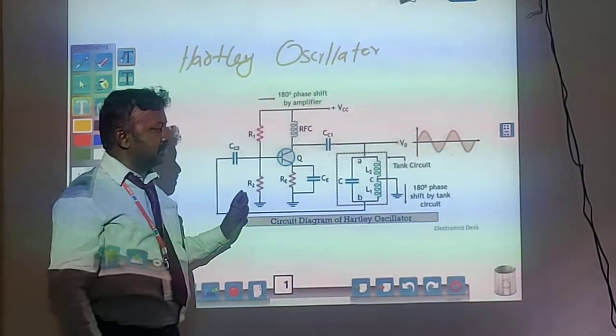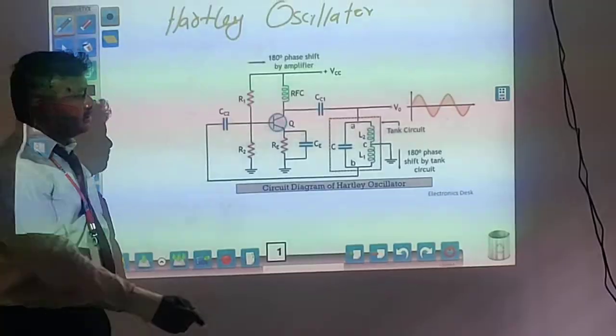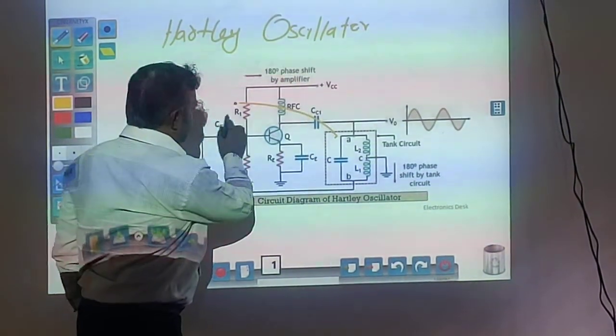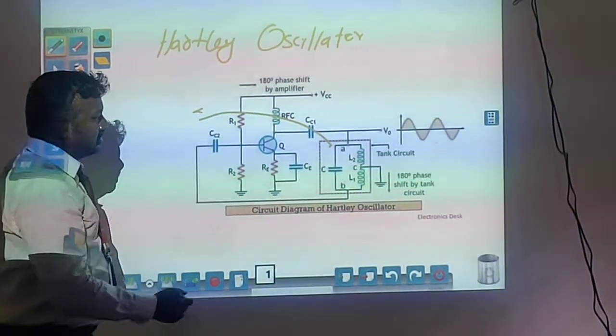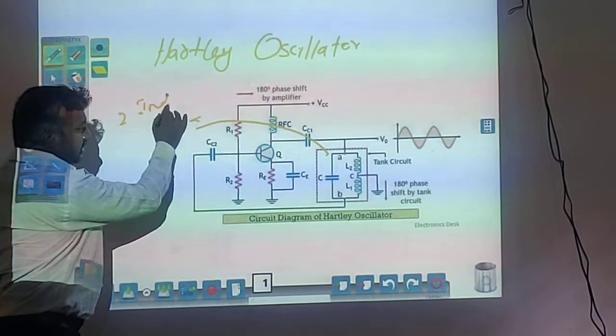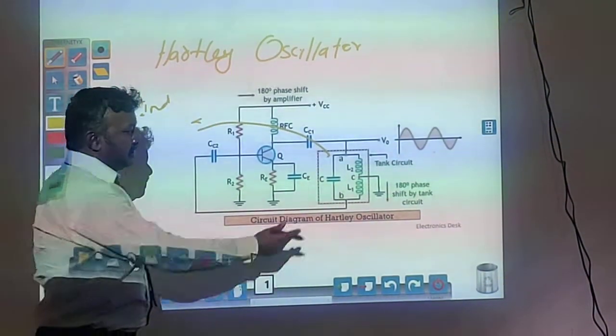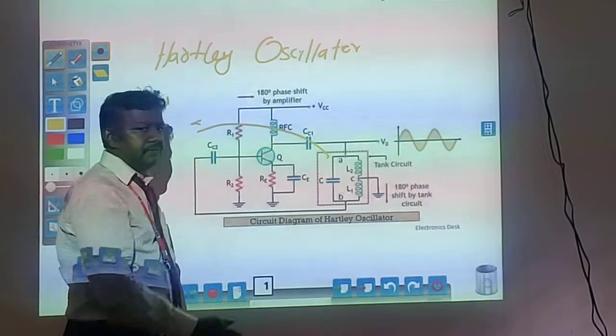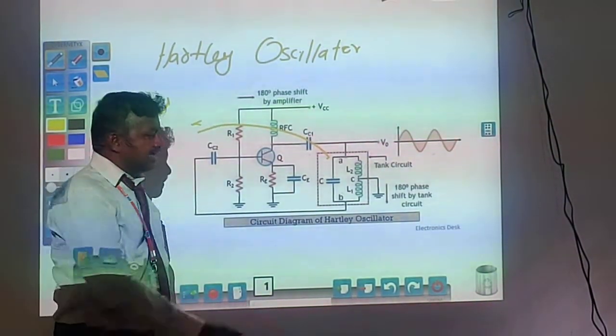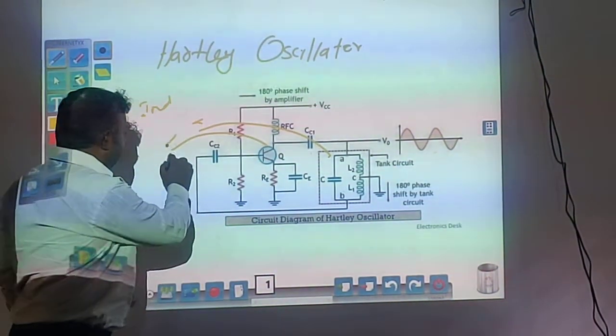In this Hartley oscillator, the main component is the tank circuit. This tank circuit consists of two inductors and one capacitor. The capacitor provides a phase shift of 180 degrees, and another 180 degrees is provided by the tank circuit.